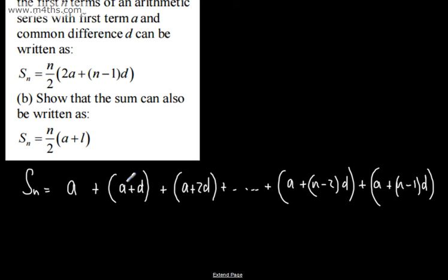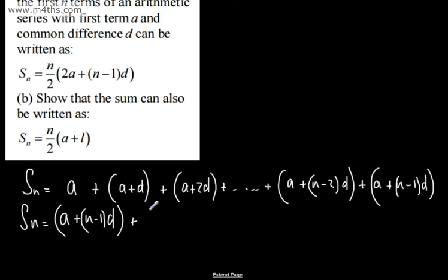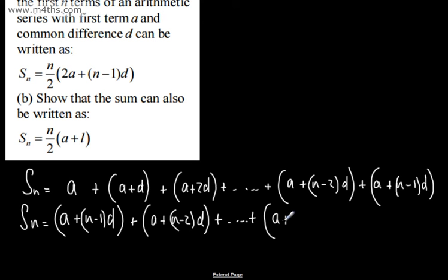To show the proof of this, we simply write this out again, but this time backwards. So I have a plus (n minus 1) multiplied by d, plus a plus (n minus 2) multiplied by d, then all of the other terms in the middle, then a plus 2d, then a plus d, and finally plus a.